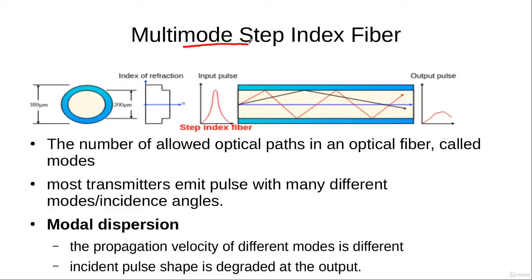We come to the multi-mode step index fiber. Suppose we have a transmitter or light source placed here, and this light source emits an input pulse into the optical fiber. This input pulse consists of different rays that have different angles of incidence. For example, the angle of incidence of the black ray is lower than that of the red ray. As the angles of incidence differ, these rays adopt different paths inside the optical fiber.